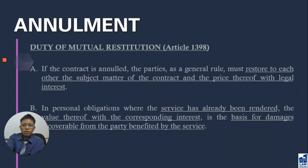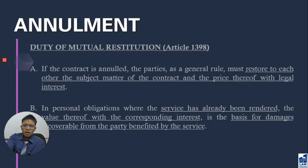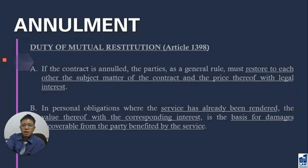What if your obligation is a personal one — you rendered a service? Once you render a service, you cannot unrender it. Like if someone pointed a gun at you and made you sing — can you un-sing the song? No. So the basis of mutual restitution for personal obligations is damages, based on the value of the service rendered with corresponding interest, to be paid by the party who benefited from the service.